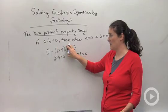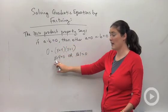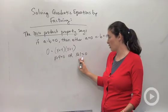It's like this guy's a, that guy's b. If a times b is zero, then either a equals zero or b equals zero.